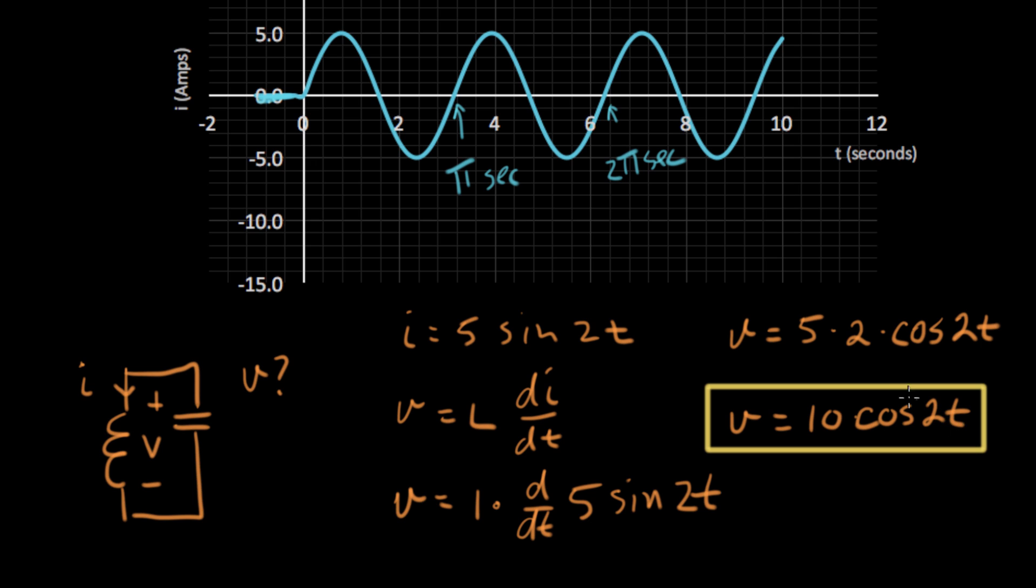So something interesting just happened here. Let me show you. We started with the current being a sine function, and we eventually took the derivative of that sine function, and now we have a cosine function. So we went from sine to cosine for voltage. That means the voltage doesn't look quite exactly like the current. Let me show you a plot of the voltage.